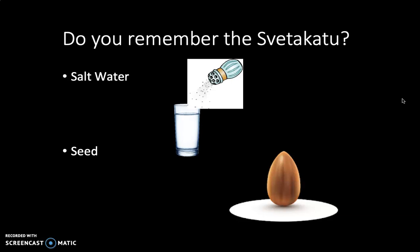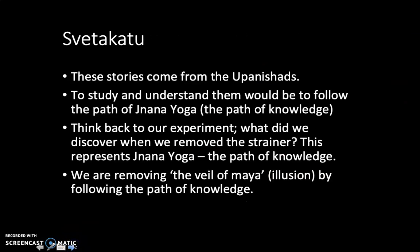Stories like this come from a part of Hindu scripture called the Upanishads. By studying and understanding the story, you're following what is sometimes called Jnana Yoga — Jnana meaning the path of knowledge. The word yoga probably makes you think of an exercise routine, but yoga basically means a path towards God, and there are different types of yogas in Hinduism. Jnana Yoga is the path of knowledge, and the aim for a person following it would be to remove the veil of Maya — the veil of illusion — by following the path of knowledge, to see beyond the falseness of our reality to the truth of Brahman beyond.